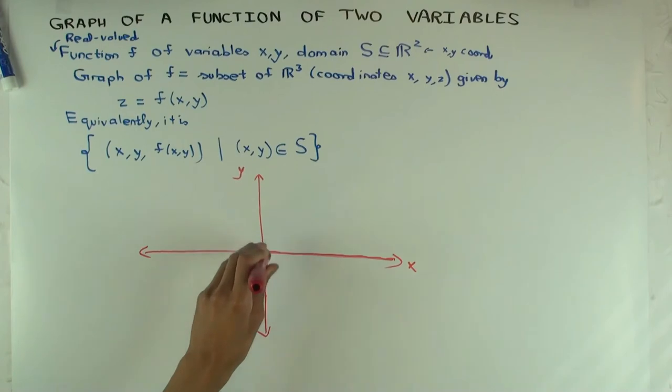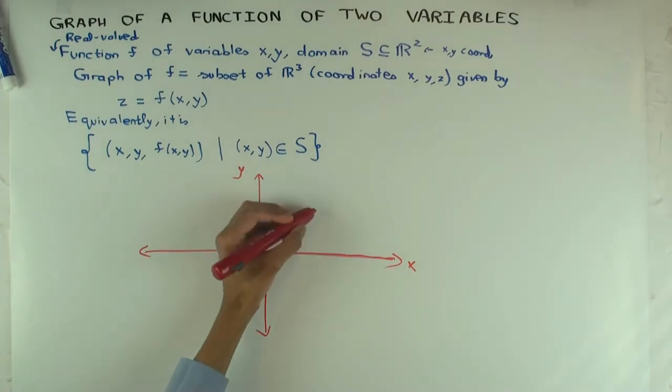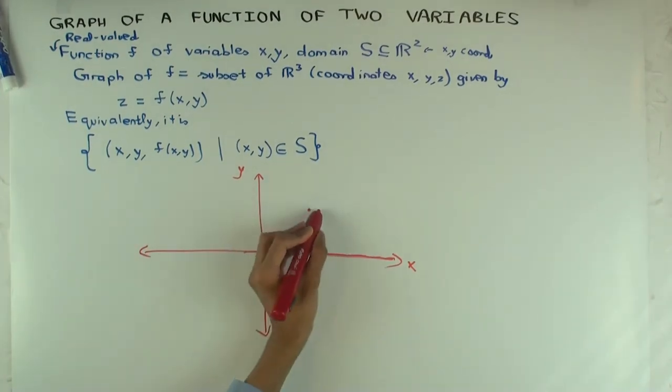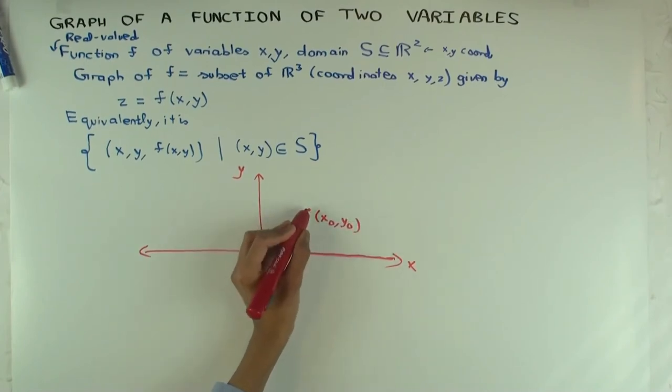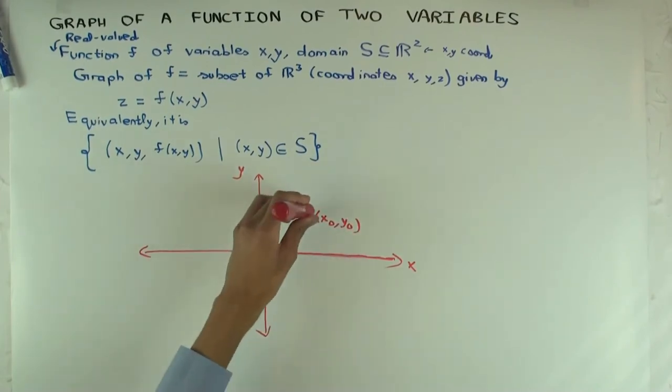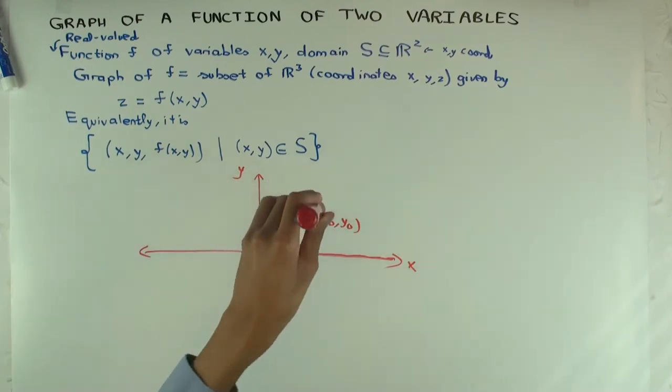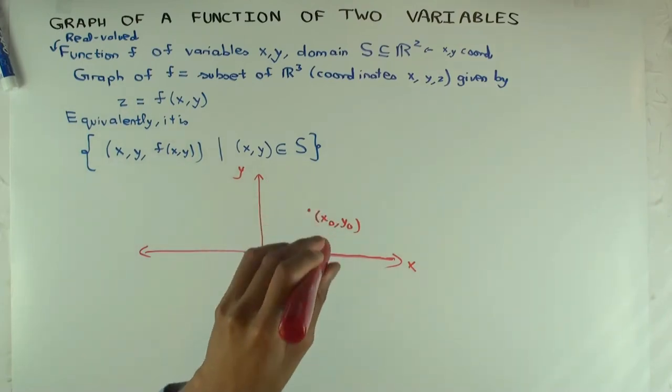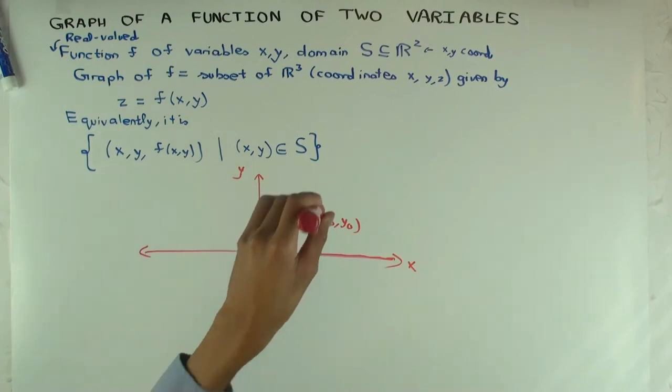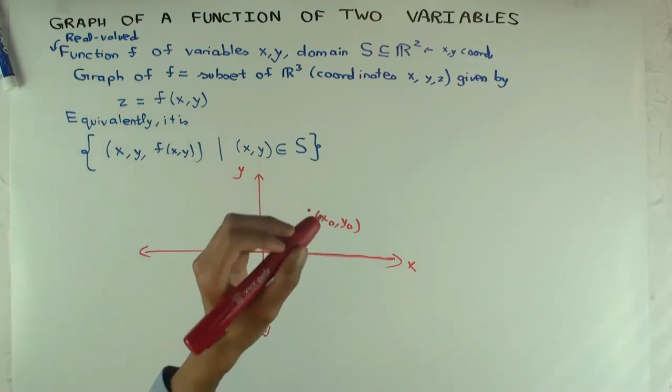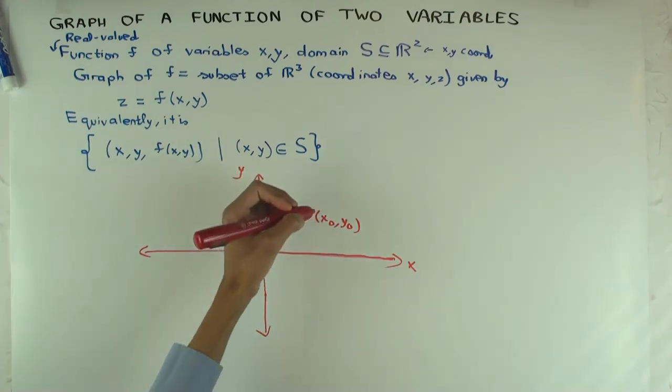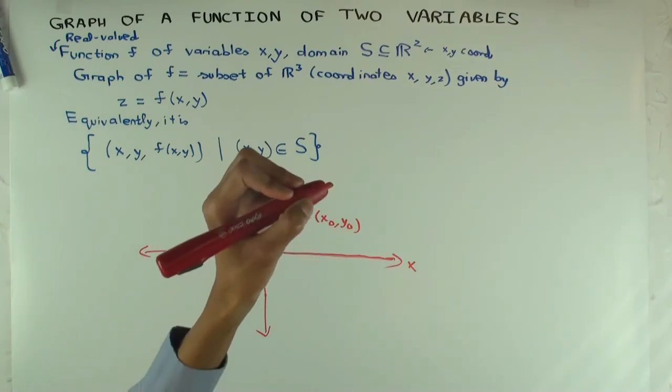The third axis would be the z axis, which would be going straight up at you, straight up at the camera. And how does the graph look? Well, for every point here—so if (x₀, y₀) is a point here in the domain—then there's going to be exactly one point in this vertical line. The vertical line is given by the equation x equals x₀ and y equals y₀. And where will that point be?